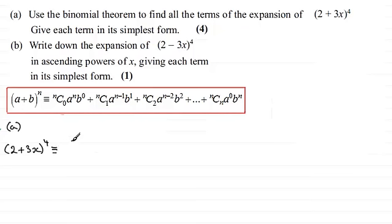So this is going to be 4c0, and then it's a to the power n, b to the power 0. So then to this we add 4c1. And now we reduce the power on the a by 1. So it's now 2 to the power 3, and we increase the power on the b. So it was 3x to the power 0, it's now 3x to the power 1. All the time these powers, remember, add up to 4.